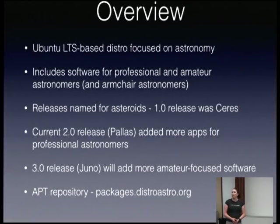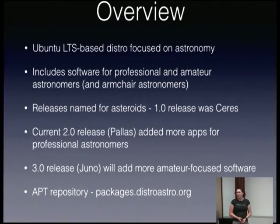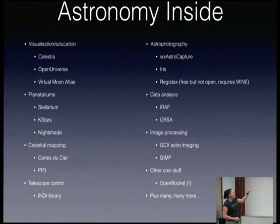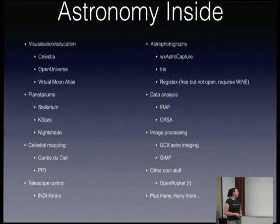They have an app repository for all of this stuff. As they're building things that are not in the standard Ubuntu sources, they're making them available, and by default that repository is enabled in your sources in DistroAstro. There's a whole bunch of visualization tools. There are planetarium maps — Stellarium you may be familiar with, K-Stars, Nightshade, which do similar kinds of jobs. There are also celestial mapping tools, so if you're an amateur astronomer planning an observing run in three days' time, you can print off maps for yourself.